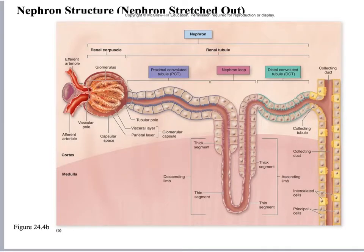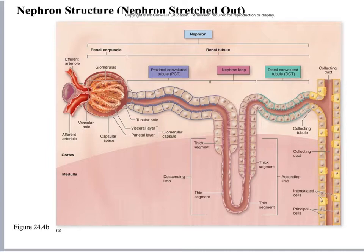Here's the nephron structure from the textbook, stretched out. You can see the afferent arteriole, the capsular space between the glomerulus and the capsule, the proximal convoluted tubule, the loop of Henle, and the distal convoluted tubule. Notice differences in the epithelium thickness of the surrounding tubes — thicker at the proximal and distal tubules, thinner at the loop. This is important because it regulates the movement of solutes and water in and out of the tubule.